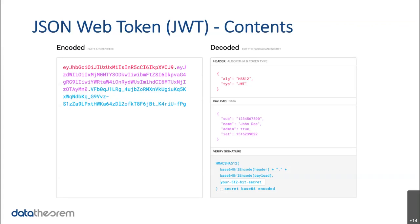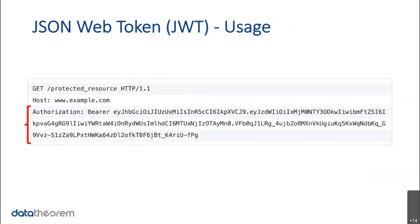And how do we use this token? Whenever the user wants to access a protected service or resource, the client sends the JWT in the Authorization HTTP header using the Bearer schema.